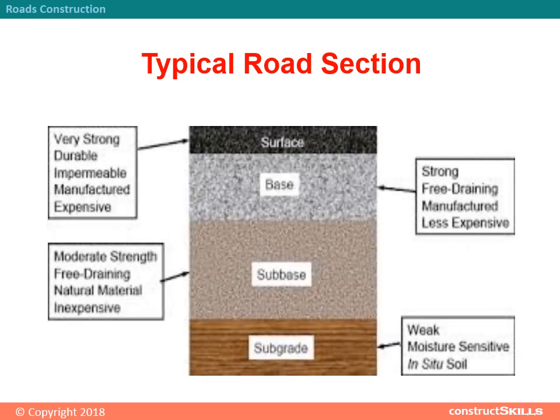Here a typical section of road is shown in an image. The lowermost layer is the sub-grade layer, which is weak and moisture-sensitive in-situ soil. Above it, the sub-base layer is provided, which is moderately strong, free-draining, and inexpensive as it is natural material. After that, the base layer is provided, which is strong, free-draining, and less expensive as it is manufactured. The uppermost layer is the road surface, which is very strong, impermeable, and expensive as it is manufactured.